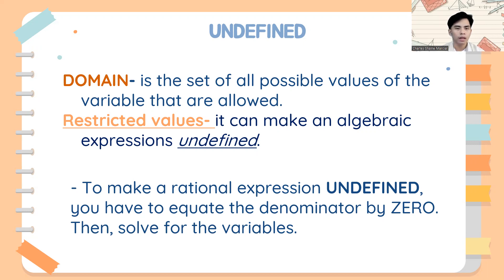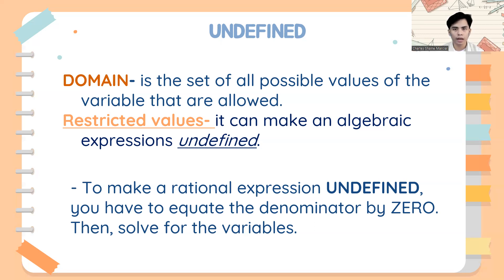Now, if you can recall, when the denominator equals zero, that is undefined. So how do you make a rational expression undefined? You have to equate the denominator to zero. So we need to set the denominator equal to zero, and then after that, you will solve for the variable.